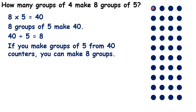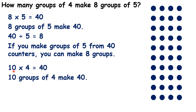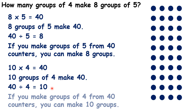We can count: one, two, three, four, five, six, seven, eight, nine, ten groups. So we can answer our question — ten groups of four make eight groups of five. We still have forty counters, but we've now rearranged them into ten groups of four. What we've really done is divided our counters into groups of four. So our division fact is: forty divided by four is ten, because if you make groups of four from forty counters, like we have here, you can make ten groups.